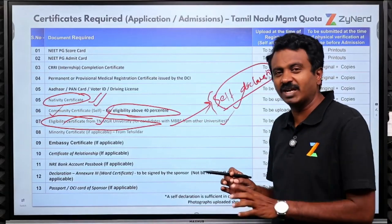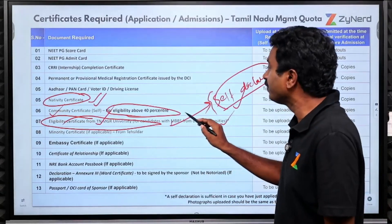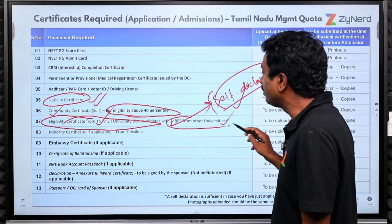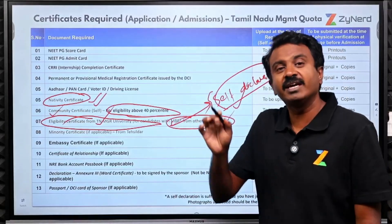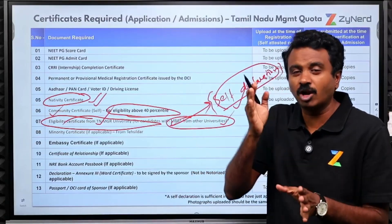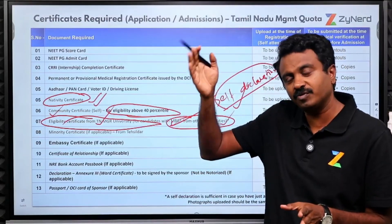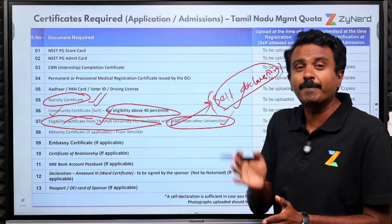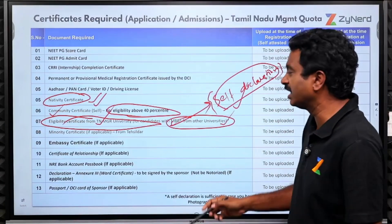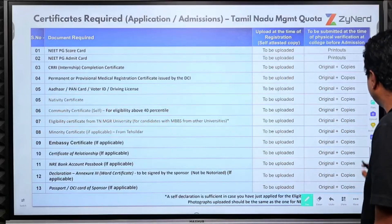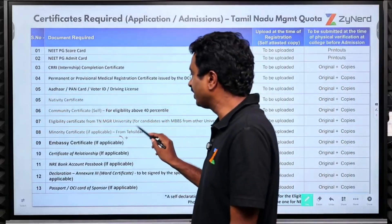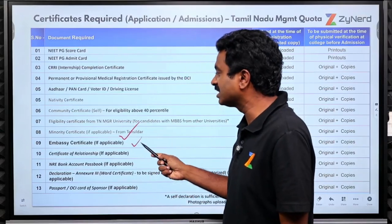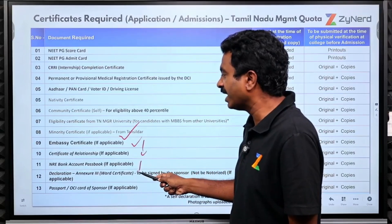The self-declaration format is available — if you are a subscriber, it has already been sent to you via email. The eligibility certificate is required at the time of admissions, so apply for it at TNMGR University three to four weeks after allotment if Tamil Nadu is your seat. Minority certificate, if applicable, should be obtained from the Tahsildar. Embassy certificate and certificate of relationship for NRI candidates are also required.